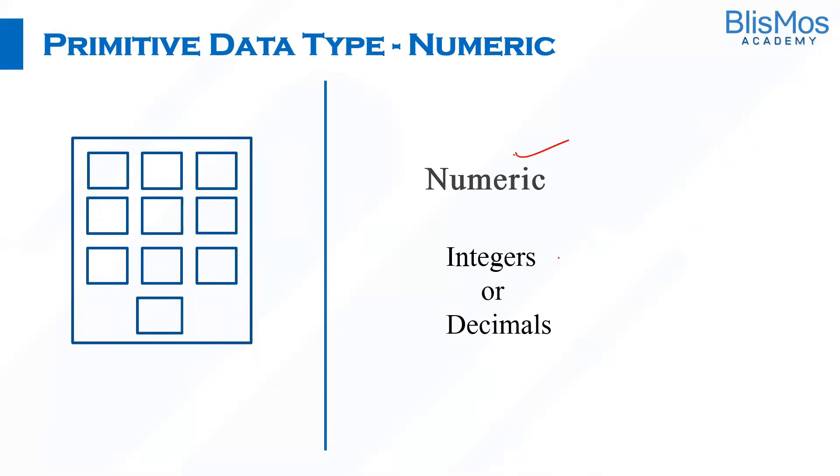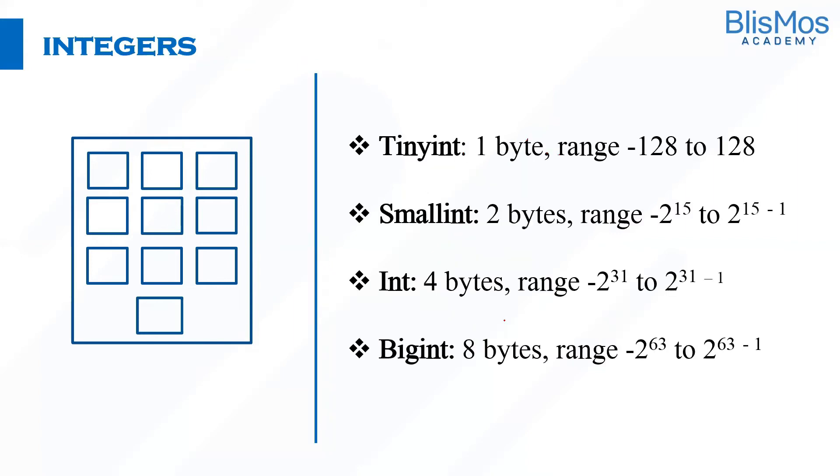The next primitive data type in Hive is numeric data types. Here we have integers or decimals as numeric data types. In integers we have tinyint, smallint, int, and bigint. How are we classifying these? It is based on how much memory is allocated to each one of them.